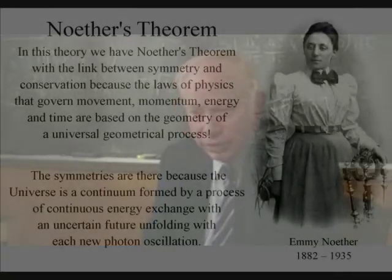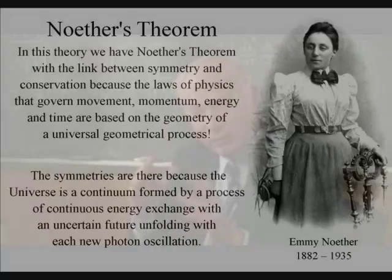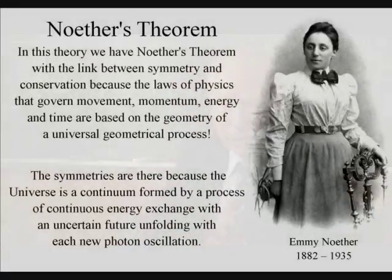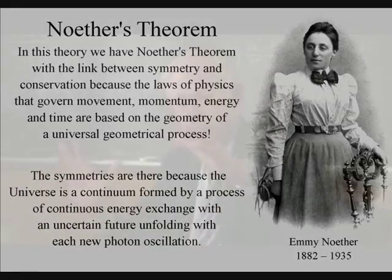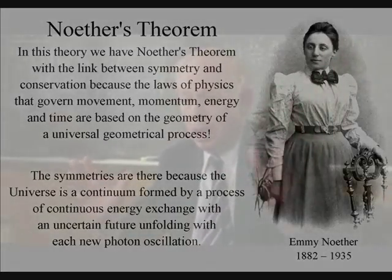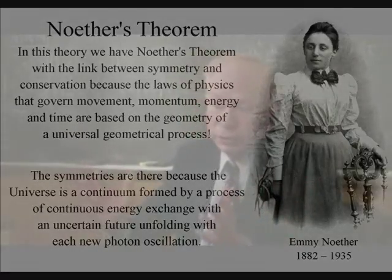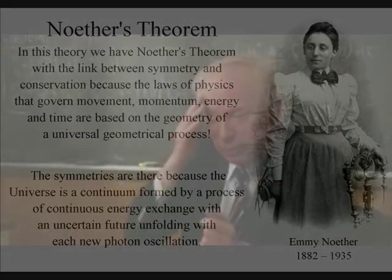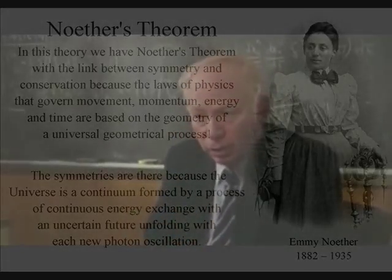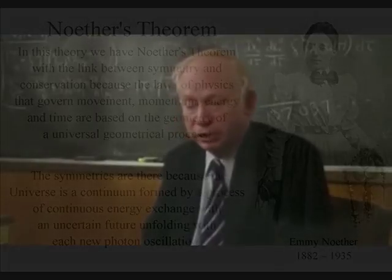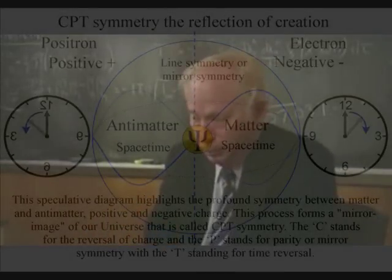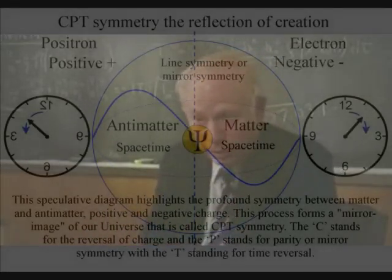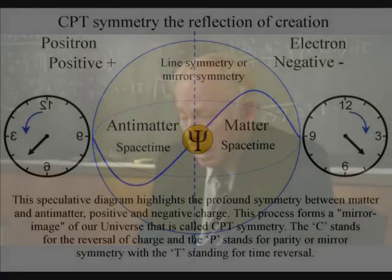And the symmetries of nature are the variety of different changes of point of view, which have that property that they don't change the laws of nature. And they involve translation, as I said, the movement of the laboratory from one position to another. Rotation, the change in the orientation of the laboratory. And several others, some of them having nothing to do with space and time. Some of them having to do with how we identify the elementary particles. There are symmetries that say the laws of nature don't change if I, everywhere I see this particle I replace it with another particle, and vice versa. Or more complicated transformations can be done.